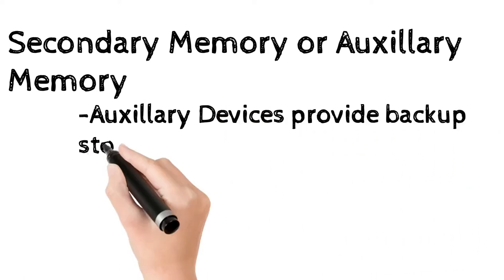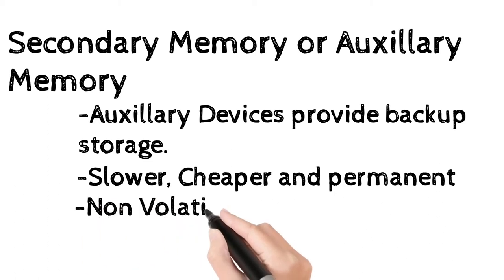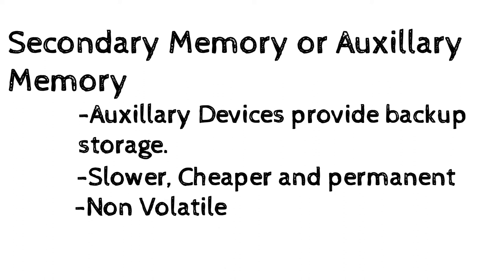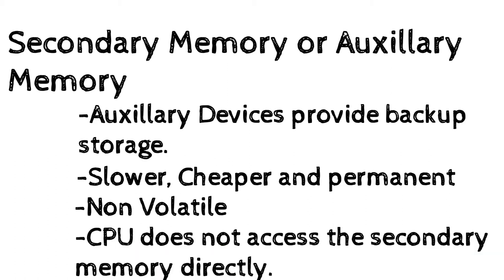Secondary memory, also known as secondary storage or auxiliary memory, is the slower and cheaper form of memory. It is a permanent storage device. The CPU does not access secondary memory directly — the content must first be copied into RAM to be processed. Secondary memory is non-volatile in nature, meaning information does not get erased even when the power is switched off, and data will not be lost unless the user erases it.